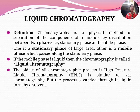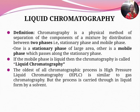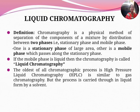Liquid chromatography is a chromatography in which the mobile phase is a liquid. Any chromatographic process has two phases: the stationary phase and the mobile phase. When the mobile phase is a liquid, that type of chromatography is called liquid chromatography. The oldest of all chromatographic processes is high pressure liquid chromatography, which is similar to gas chromatography but the process is carried out through a liquid form by a solvent.